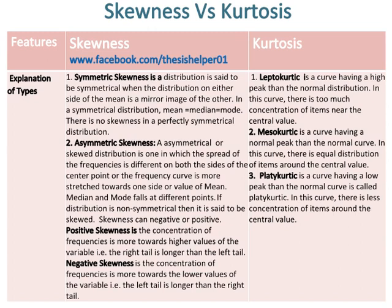Positive skewness: the concentration of frequencies is more towards higher values of the variable, i.e., the right tail is longer than the left tail. Negative skewness: the concentration of frequencies is more towards the lower values of the variable, such that the left tail is longer than the right tail.